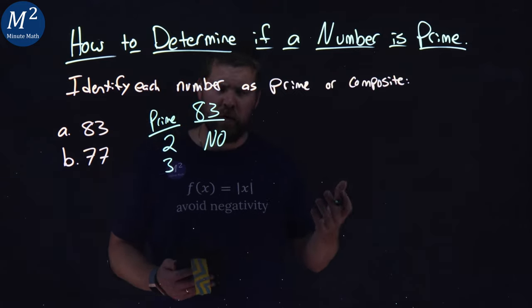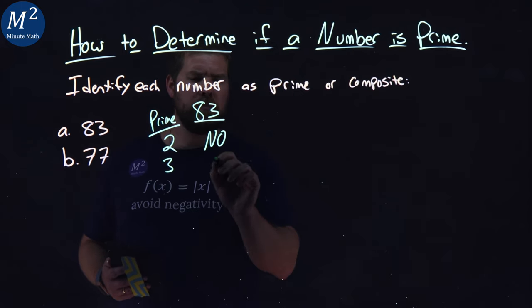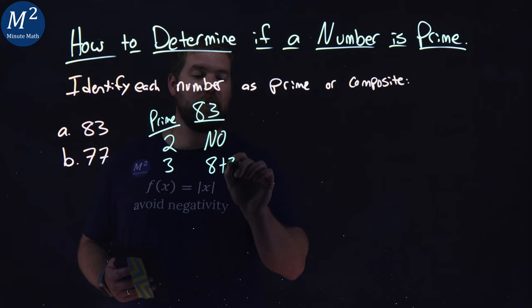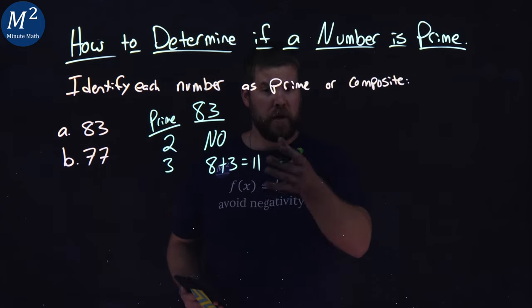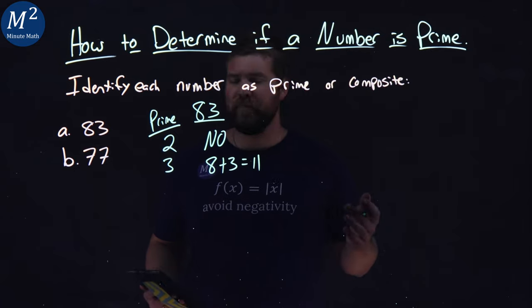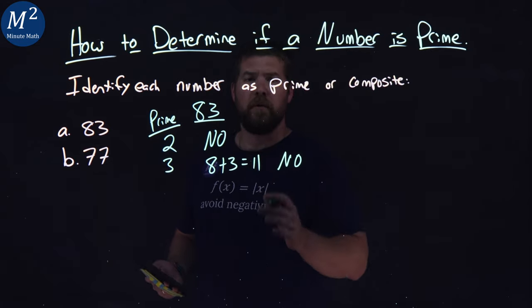Next prime number is 3. Does 3 go into 83? Well, remember our rule? Add the digits. 8 plus 3 equals 11. Does 3 go into 11? No, it doesn't. So we're done with 3.